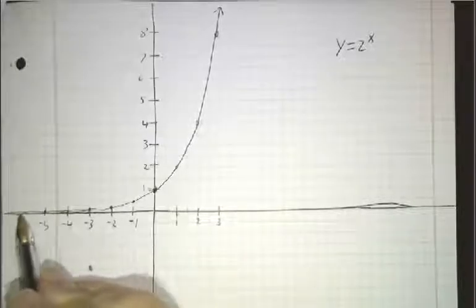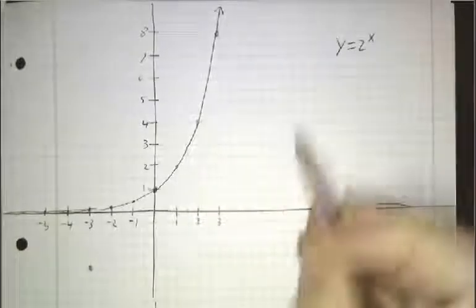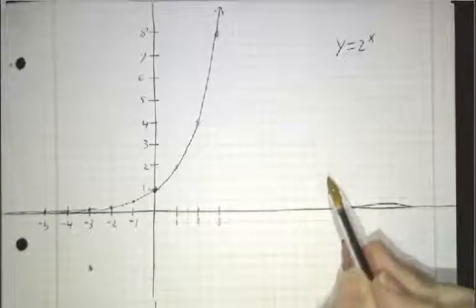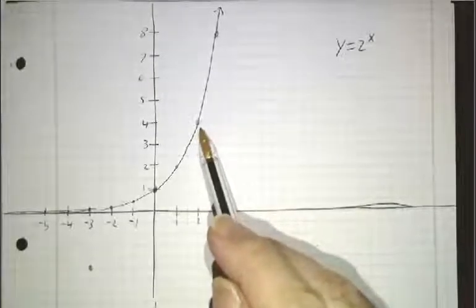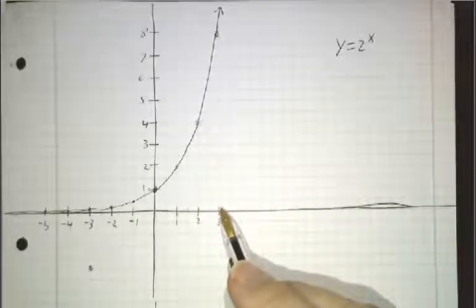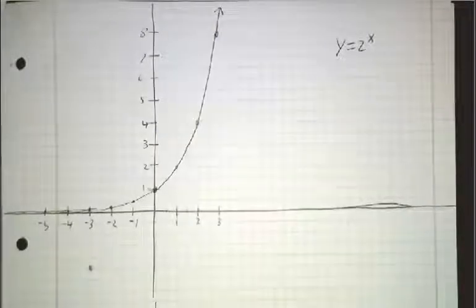And on the right, the domain extends. I mean, we can talk about what is f of 10, but it's way too big to put in the graph. Already, by the time that x is 3, we're starting to leave the graph.